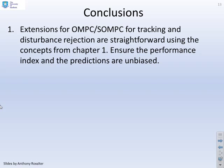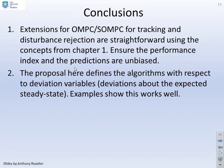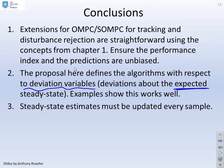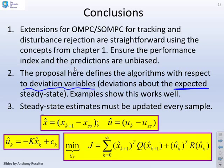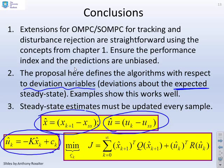In conclusion, extensions for OMPC and SOMPC to handle tracking and disturbance rejection are straightforward using the same concepts from Chapter 1: ensuring the performance index and predictions are unbiased. The algorithms are defined with respect to deviation variables — deviations about the expected steady state. The examples show this works well. The steady state estimates must be updated every sample because in practice the disturbance and target may change. As long as everything is done with respect to deviation variables, all the same results carry across as for the regulation case.